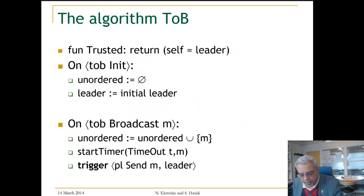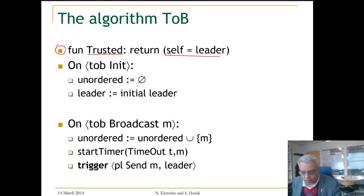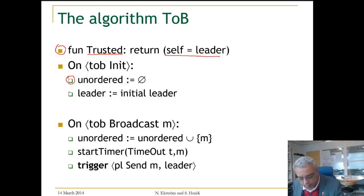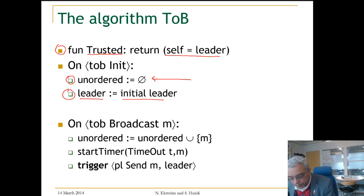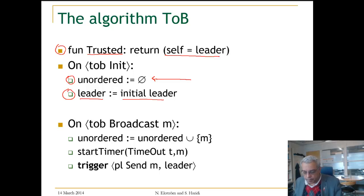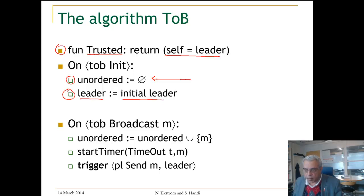The unordered set will be used for messages sent by nodes in the system that are to be broadcast. A message will be in this unordered set until we are sure it has been delivered to the leader. The leader is the node that is going to propose to the abortable sequence consensus — the leader is the proposer. If we have a single proposer, it would be very efficient to perform abortable sequence consensus. So we start a timer, and then send the message to what we think is the leader.